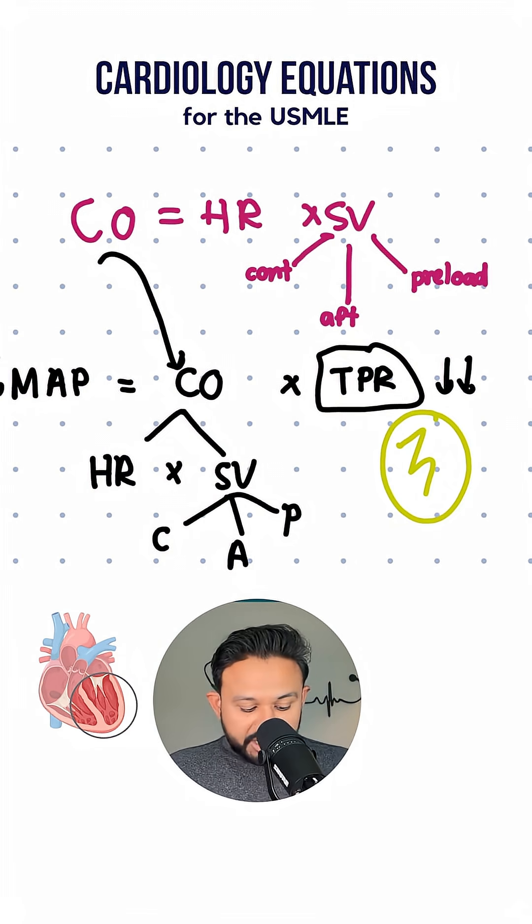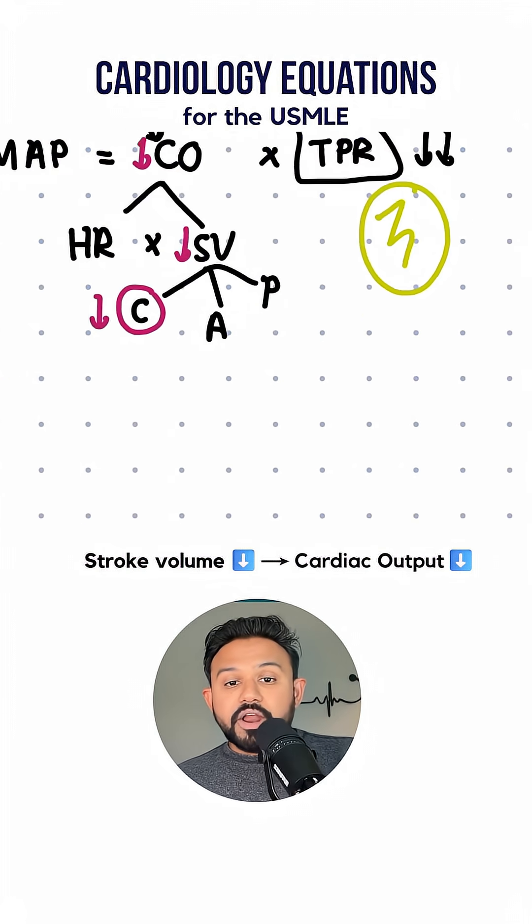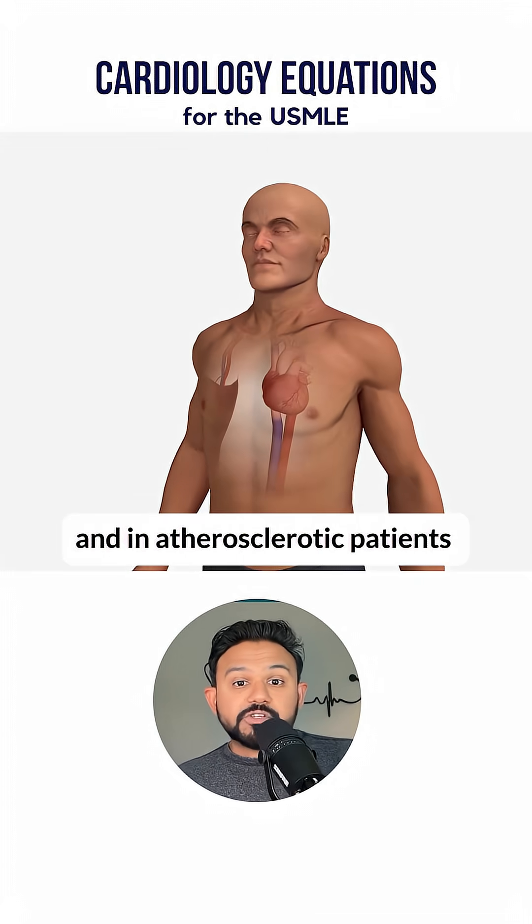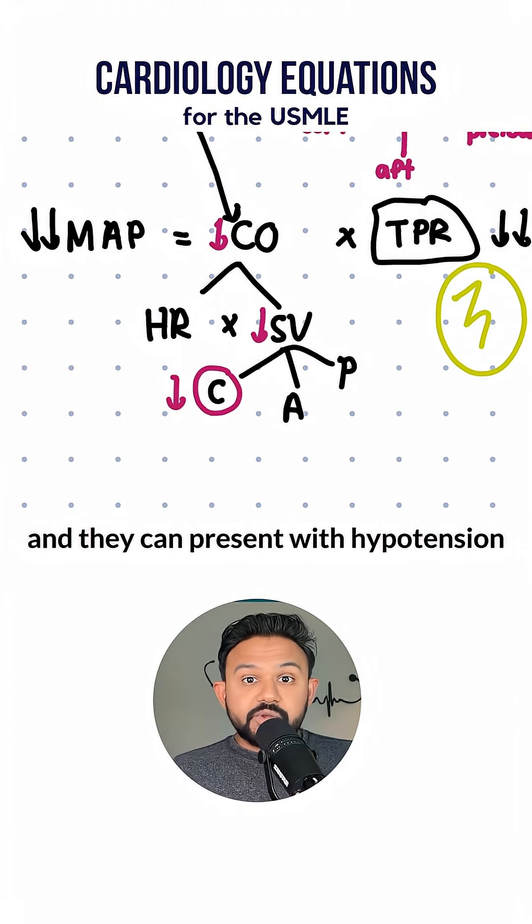Let's say the patient has cardiogenic shock. Well, if they have heart failure with reduced ejection fraction, maybe their contractility is poor, causing their stroke volume to be poor, and their cardiac output to be poor. And in atherosclerotic patients who have MIs, they can get cardiogenic shock, and they can present with hypotension.